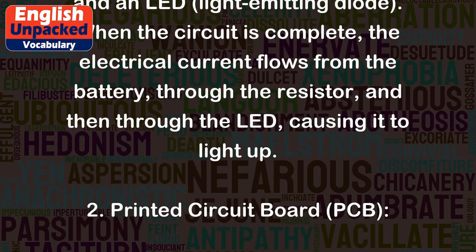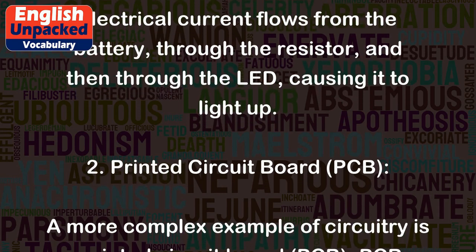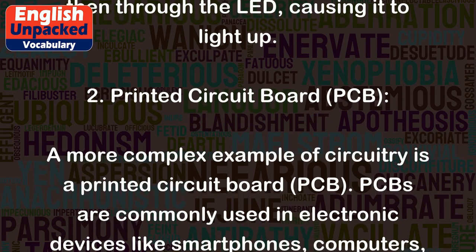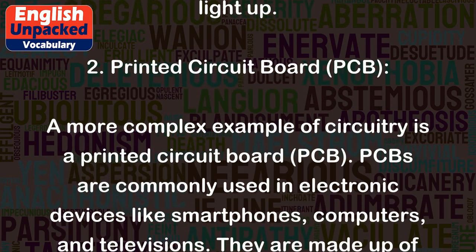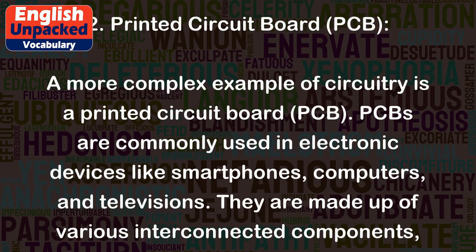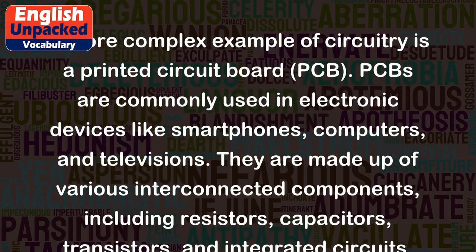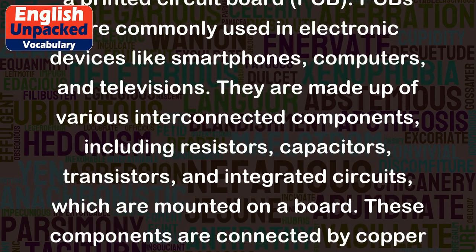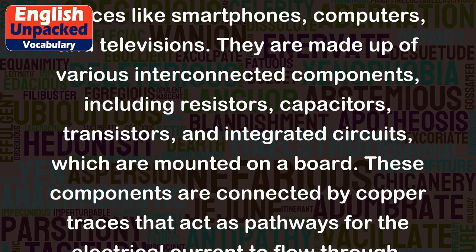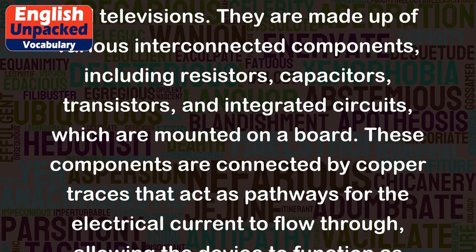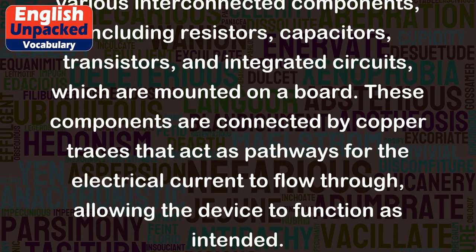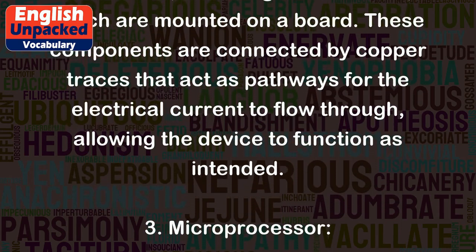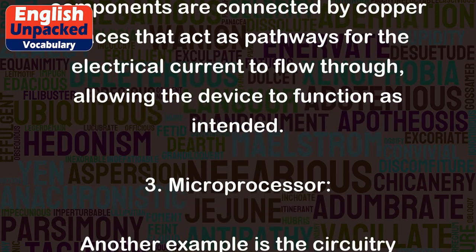Second, a printed circuit board (PCB): a more complex example of circuitry is a PCB. PCBs are commonly used in electronic devices like smartphones, computers, and televisions. They are made up of various interconnected components, including resistors, capacitors, transistors, and integrated circuits, which are mounted on a board. These components are connected by copper traces that act as pathways for the electrical current to flow through, allowing the device to function as intended.